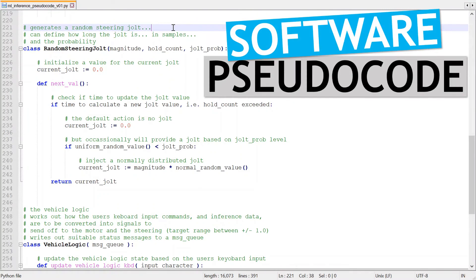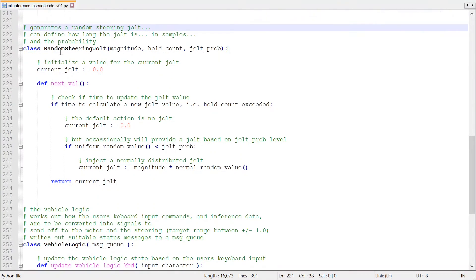Just a quick peek at the pseudo code. The only real changes needed were to create a simple helper class to manage the noise injection. In the code, I call it a jolt. So the code includes a random steering jolt class.